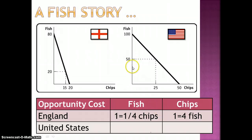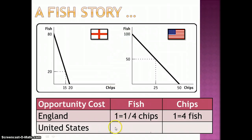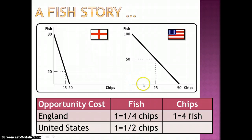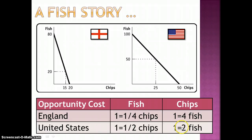For the US, the opportunity cost of making fish is that they give up 50 chips to produce 100 fish, so the opportunity cost of one fish is one half chip. For every unit of fish they make, they're giving up half a unit of chips. The inverse is true for chips: the US gives up two fish for every unit of chips they make.